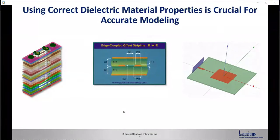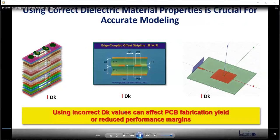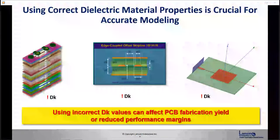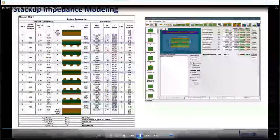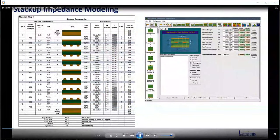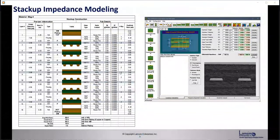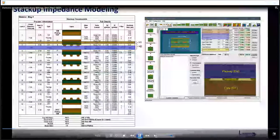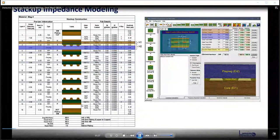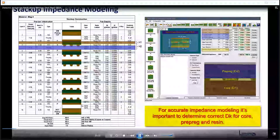Using correct dielectric material properties is crucial for accurate modeling, and one of the most important parameters is DK. Using incorrect DK values can affect the PCB fabrication yield or reduce the performance margins of your design. In the process of designing a PCB stack-up, it's important to get accurate dielectric material properties from reliable sources. For a typical differential pair stripline structure, there are generally three different layers of dielectric: the core layer, the prepreg layer, and the resin layer between the traces — and often all have different DK values. So you'll need to get the right numbers for accurate impedance modeling.